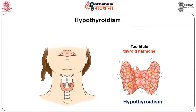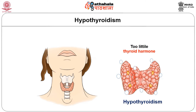Now let us go through the hypothyroidism condition. Hypothyroidism, also called underactive thyroid disease, is more prevalent among people. In other words, there is insufficient production of hormone from the thyroid gland. Hypothyroidism is just opposite to hyperthyroidism — here the hormone secretion is insufficient. Let us understand the causative factors of hypothyroidism.